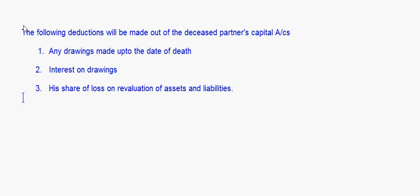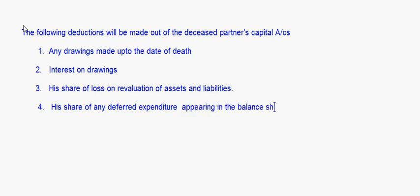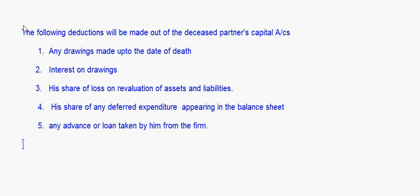If there is a profit on revaluation it will be added; if there is a loss it will be deducted. Fourth, his share of any deferred expenditure appearing in the balance sheet. Fifth, any advance or loan taken by him from the firm — that will also be deducted. Any amount of debt pertaining to him will also be deducted.